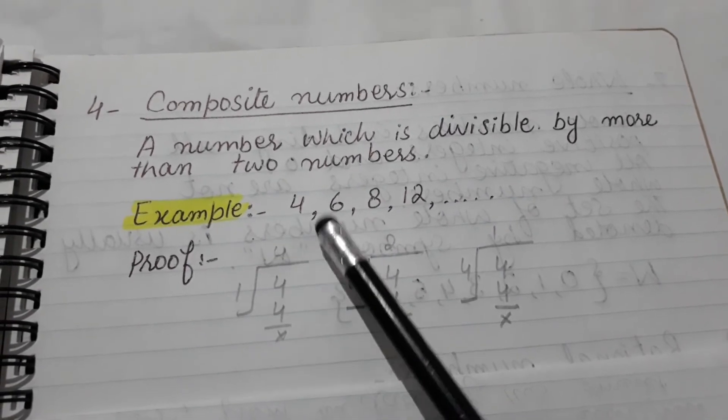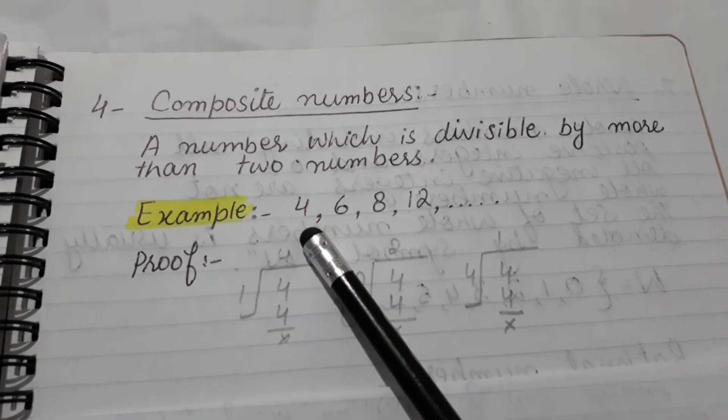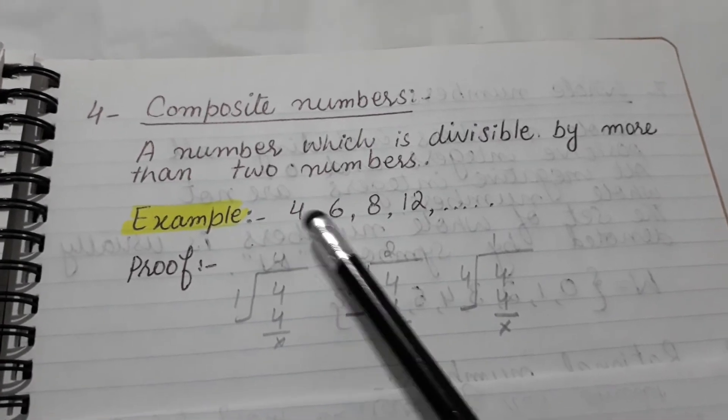For example, 4, 6, 8, 12. These numbers are divisible by more than two numbers.